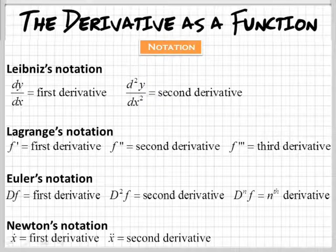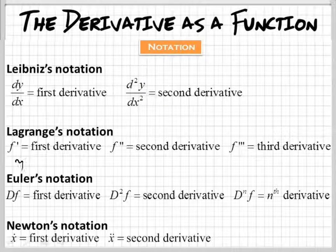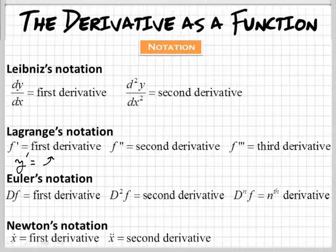Now, f prime can also be written, you will also see it like this. You'll see y prime, or you can see y double prime. So this equals the first derivative also, and that's what we would call Lagrange's notation. And you can use them interchangeably, just whatever works better for you at that time.